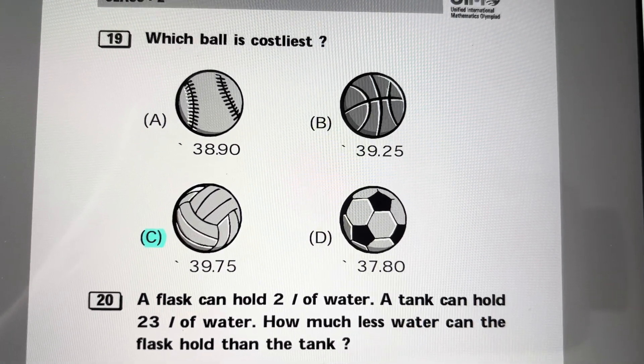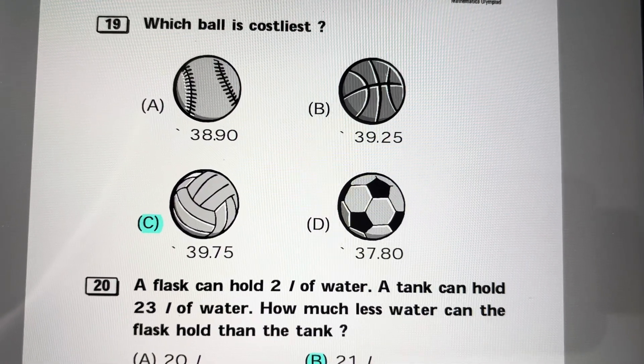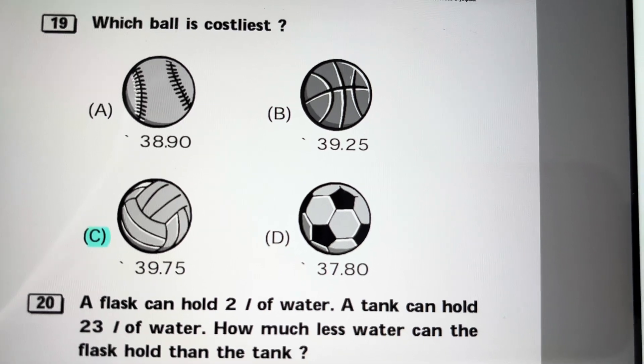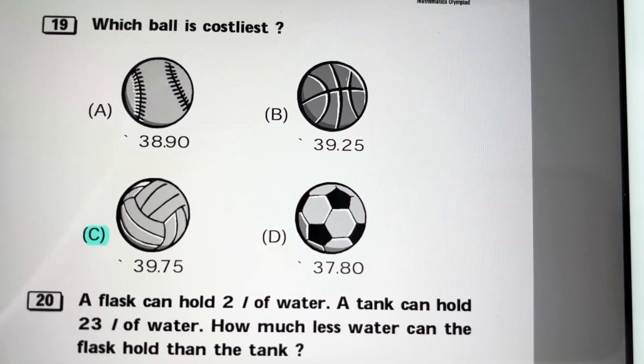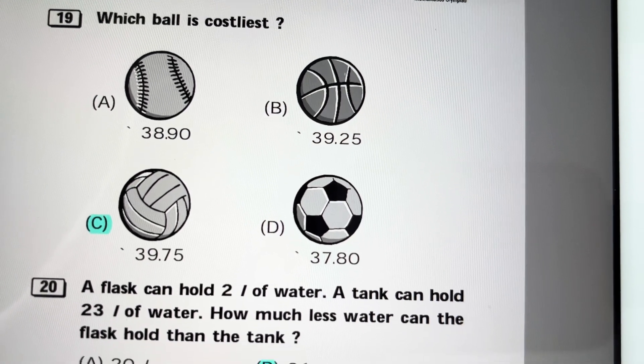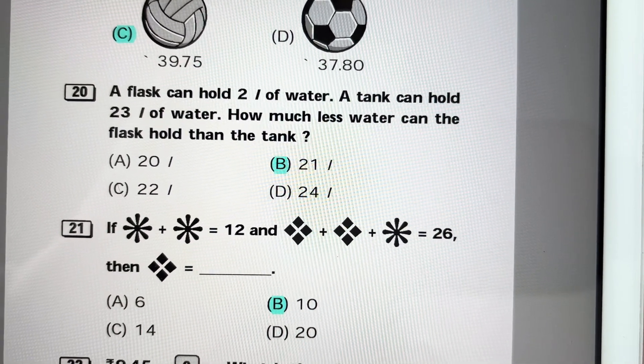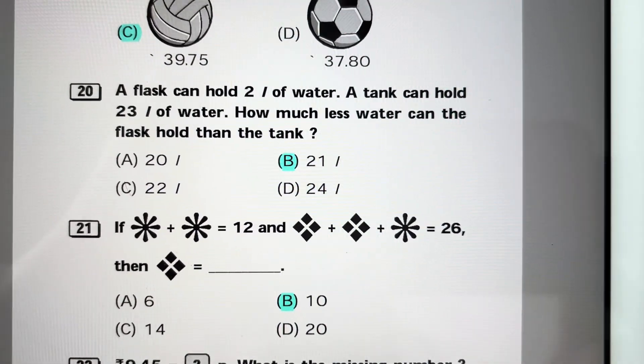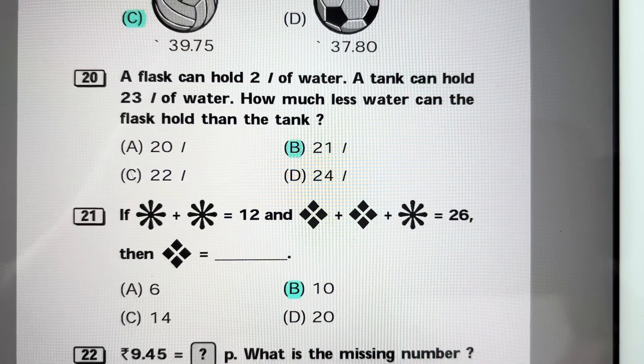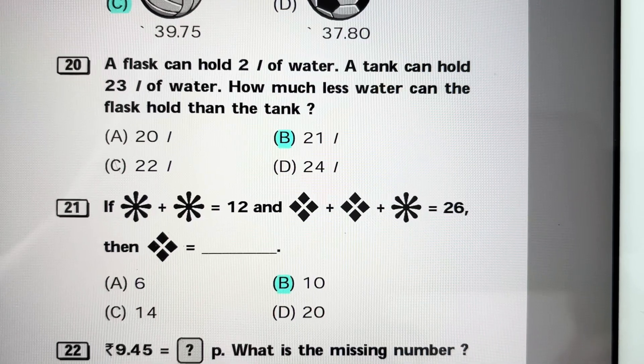Which ball is costliest? 38.90 rupees, 39.25 rupees, 39.75 rupees, 37.80 rupees. A flask can hold 2 liters of water, a tank can hold 23 liters of water. How much less water can the flask hold than the tank? 23 minus 2 equals 21 liters. Answer is B, 21.